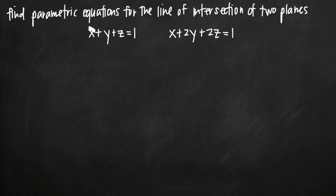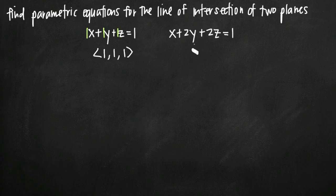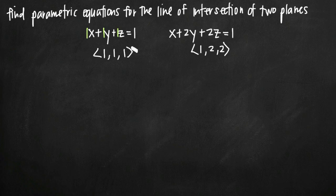In our first plane, we have coefficients of 1, 1, and 1 — that is, 1x plus 1y plus 1z — so the normal vector is (1, 1, 1). Similarly, for the second plane, if we take our coefficients, the components become 1, 2, and 2. These vectors are vector representations of the normal lines for these planes.